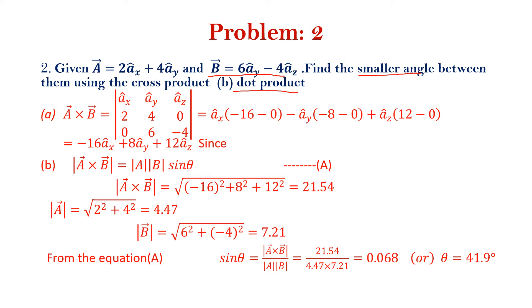So A cross B gives ax of (minus 16 minus 0) minus ay of (minus 8 minus 0) plus az of (12 minus 0), which equals minus 16ax plus 8ay plus 12az.